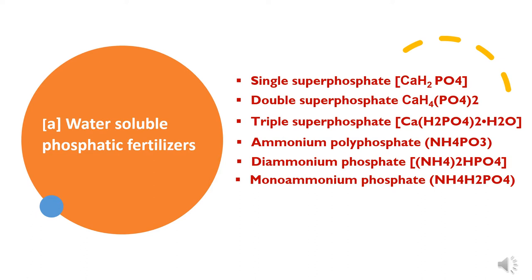The examples of water soluble Phosphatic fertilizers are single superphosphate, double superphosphate, triple superphosphate, ammonium polyphosphate, diammonium phosphate, and mono ammonium phosphate, about which we will study here in detail.